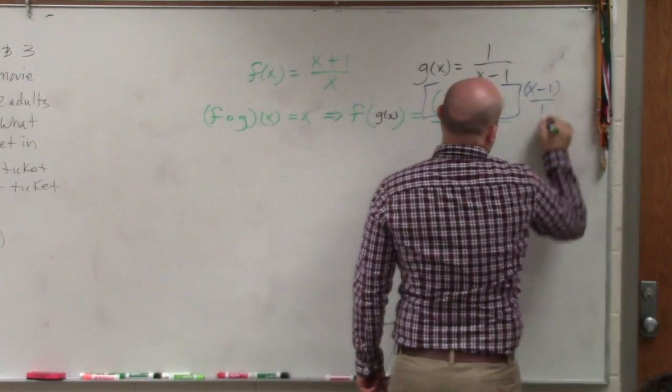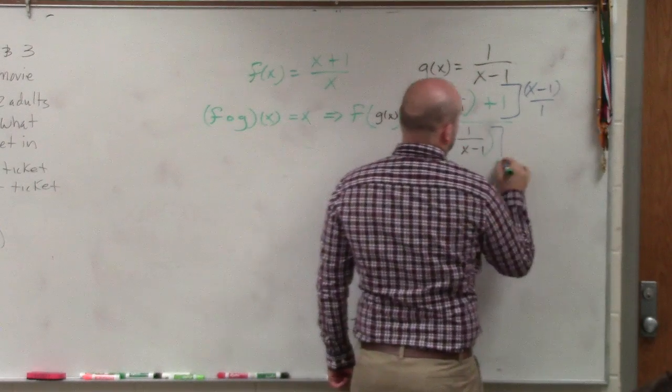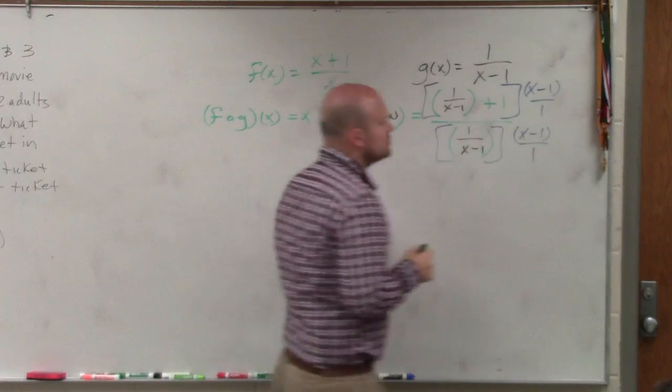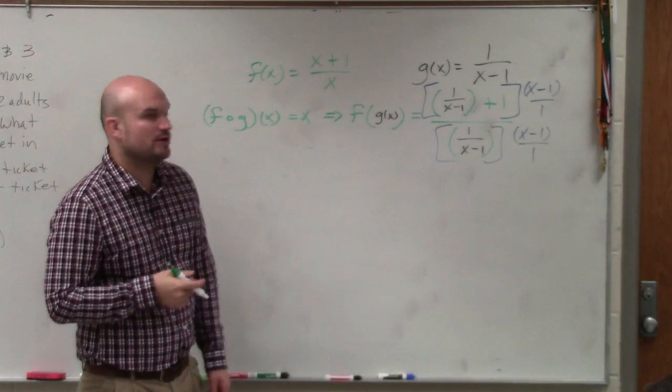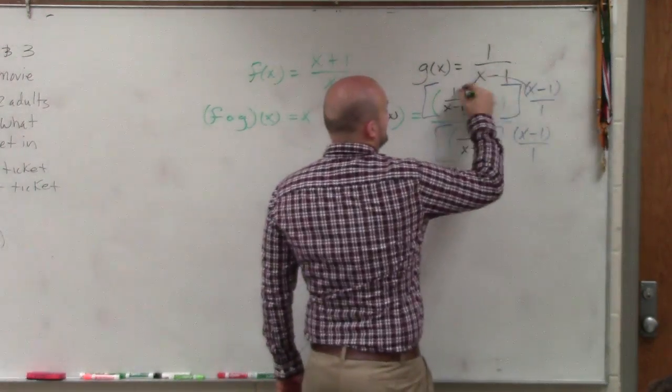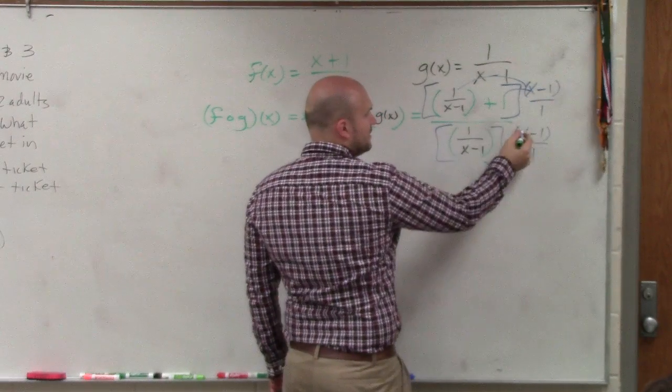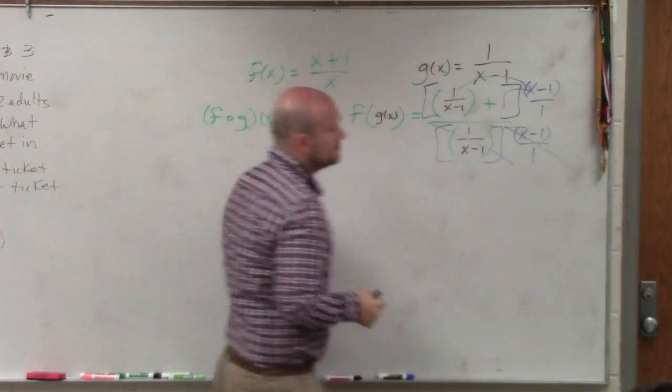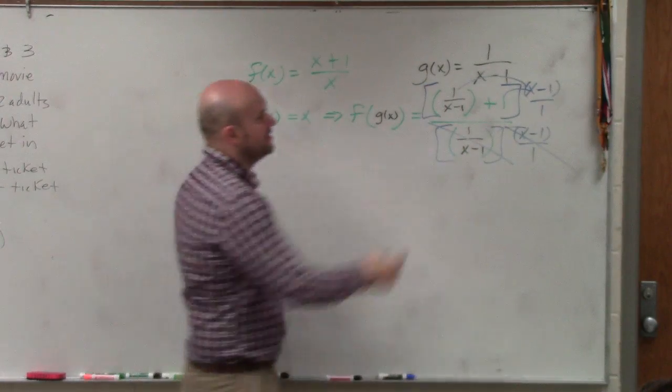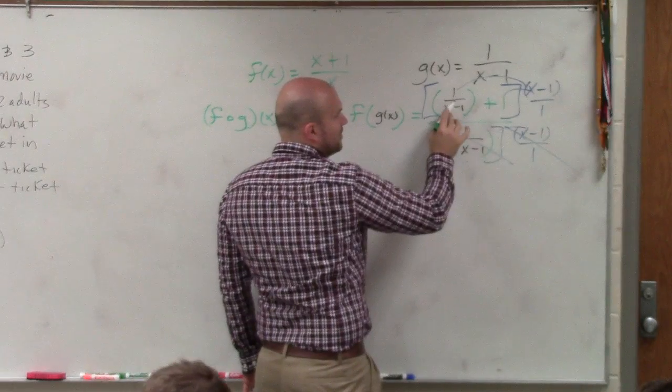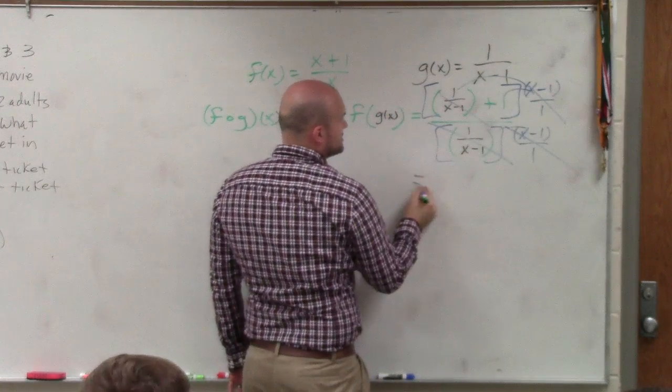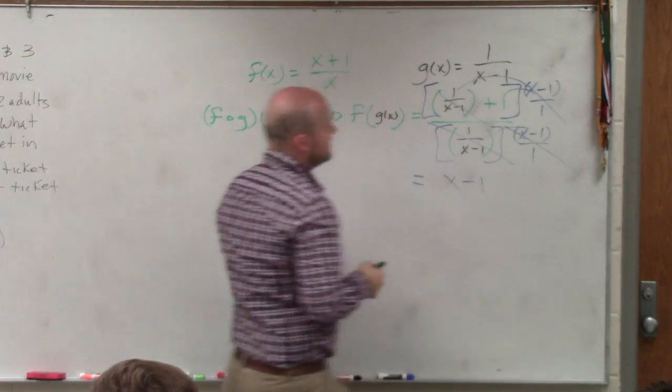So basically, I'm going to multiply by x minus 1 over 1. So what happens when I multiply by x minus 1 over 1? Well, here, I have to apply a distributive property, right? Here, I multiply. Well, these are reciprocals of each other, right? So they divide into 1. So here, these divide into 1. And then x minus 1 over 1 times 1 is just equal to x minus 1.